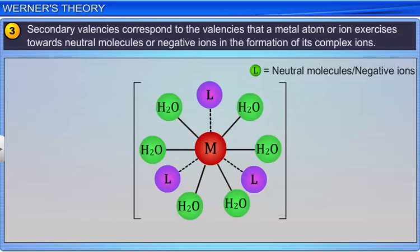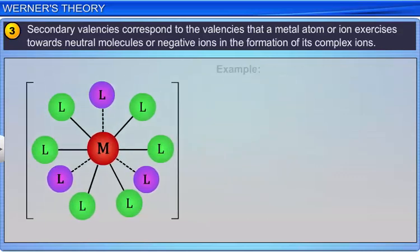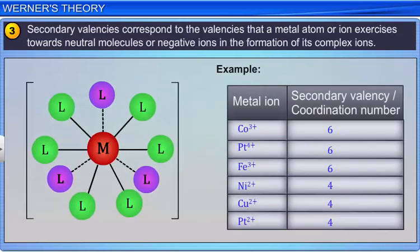For example, Cobalt 3+, Platinum 4+, and Iron 3+ ions are recognized to have a coordination number of 6. Similarly, Nickel 2+, Copper 2+, and Platinum 2+ ions have a coordination number of 4.